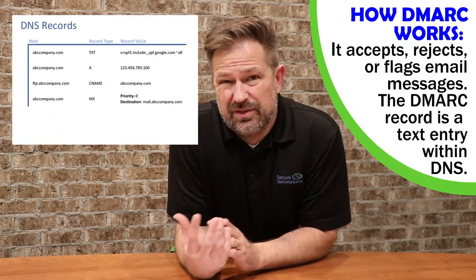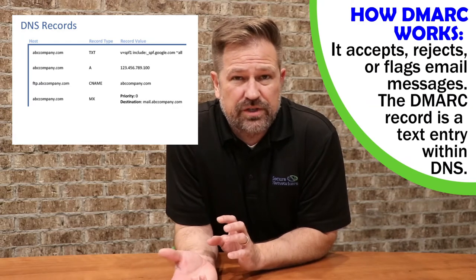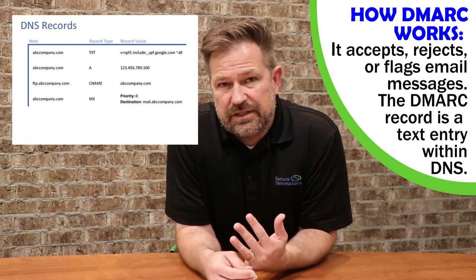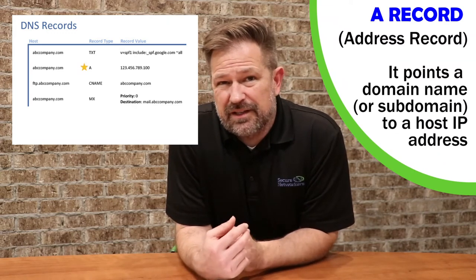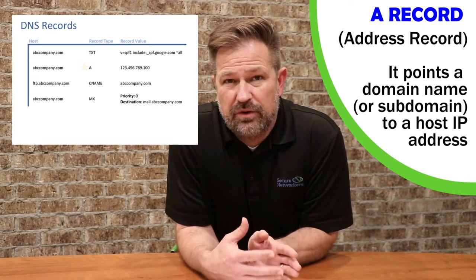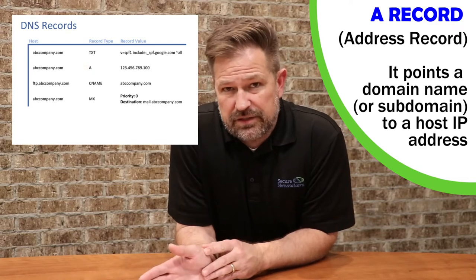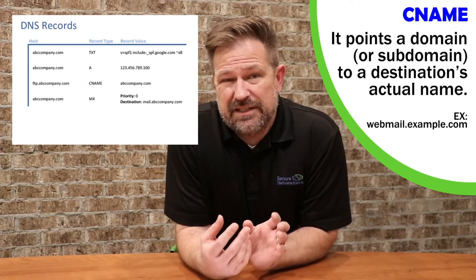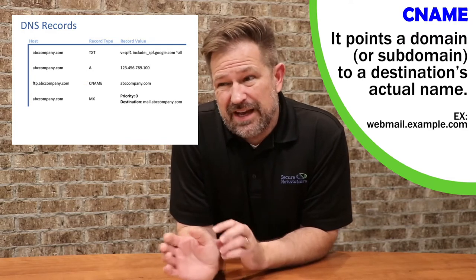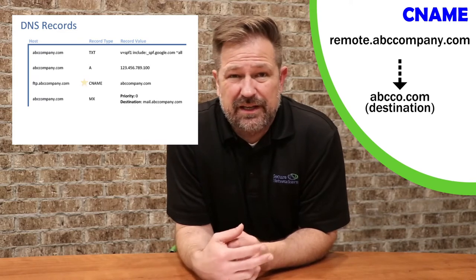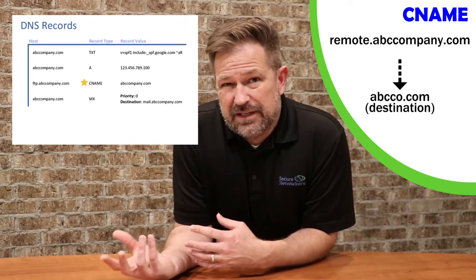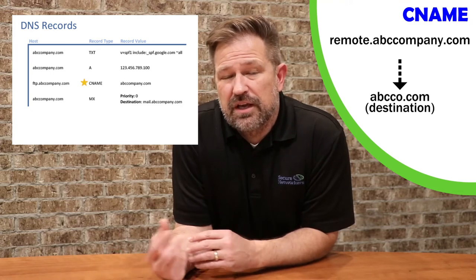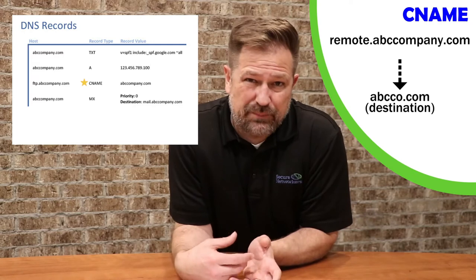All these things are basically performed within the DNS. You'll go into your registrar, or whoever your NS records are hosted with publicly. An A record basically is a record that points some type of subdomain or your root domain to an IP address. CNAMEs basically point a name of a subdomain or a root domain to an actual name somewhere. So if you wanted to translate remote.abccompany.com to go somewhere else, you'd use a CNAME. But if you want to use an IP address, that's an A record.